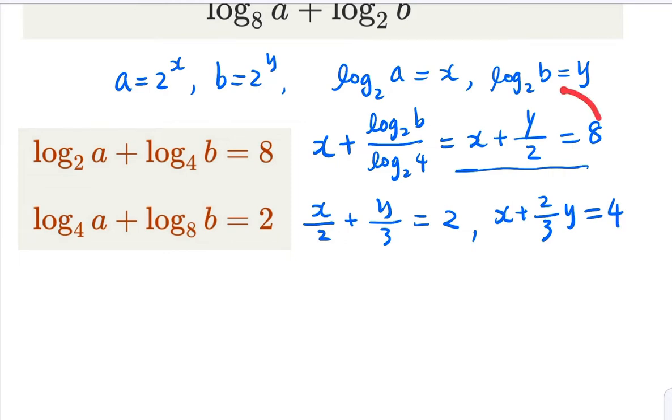Now, for these two equations, you cancel x by subtracting. So what you get is negative 1 over 6y going to equal 4. So y equal negative 24.